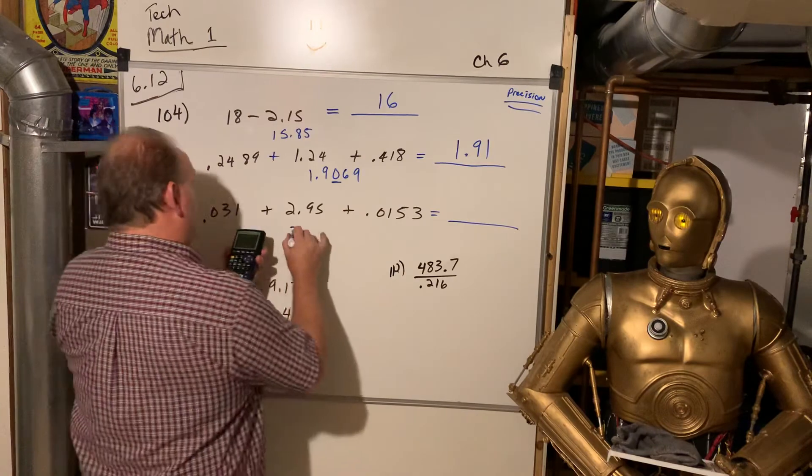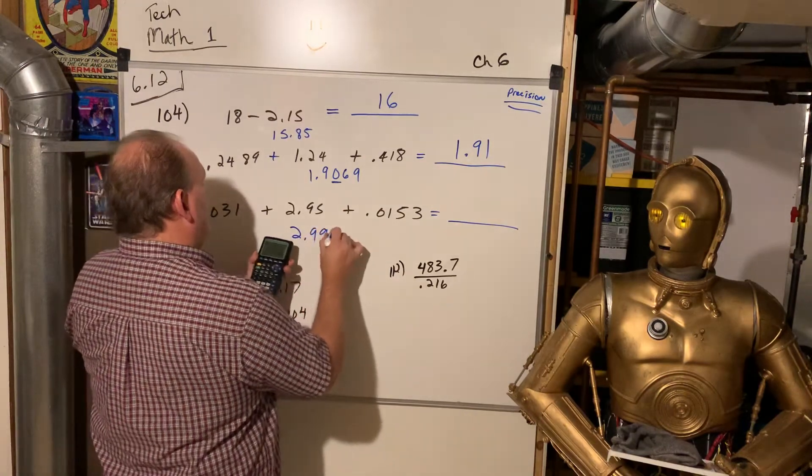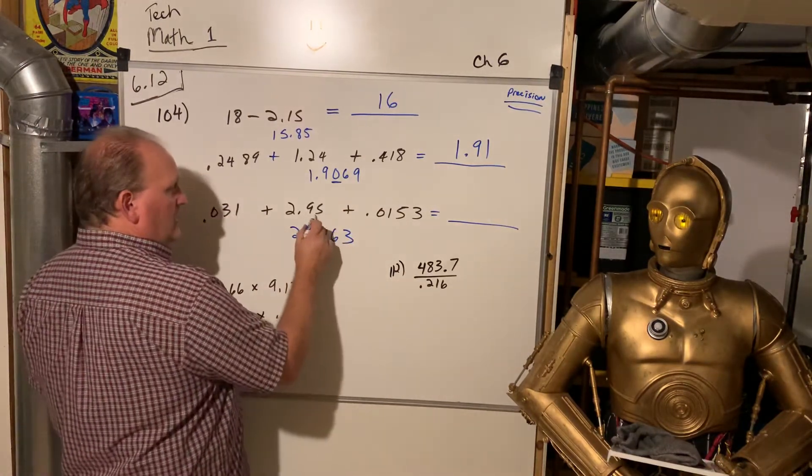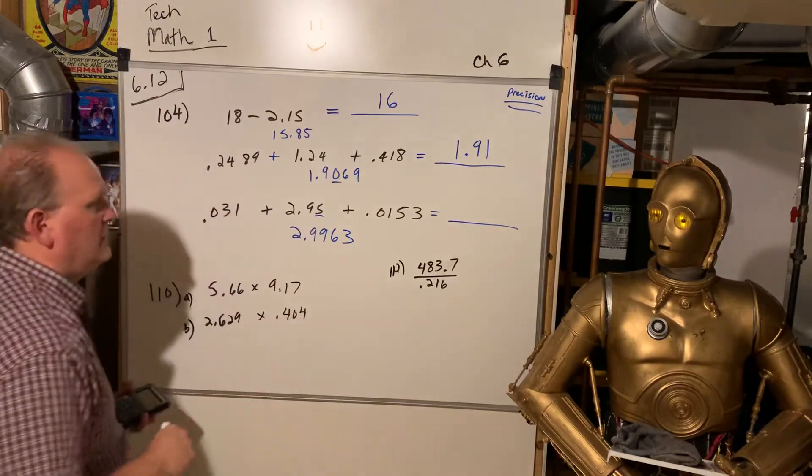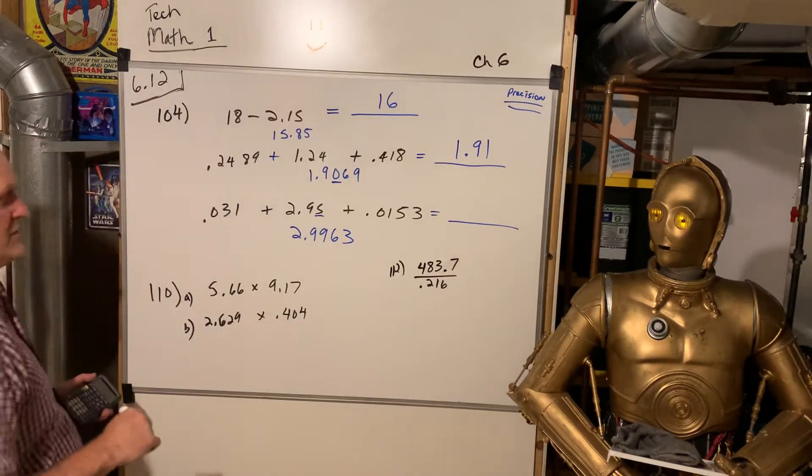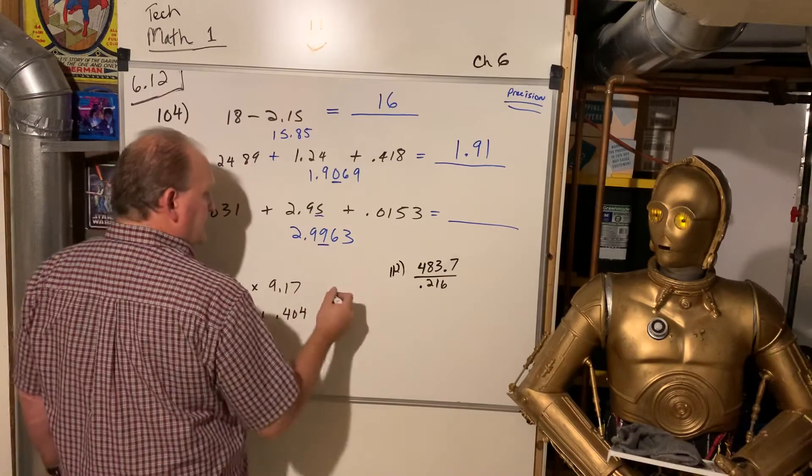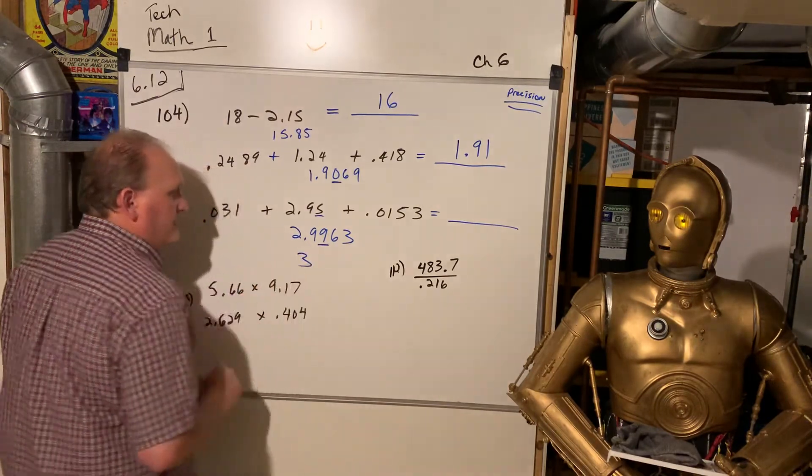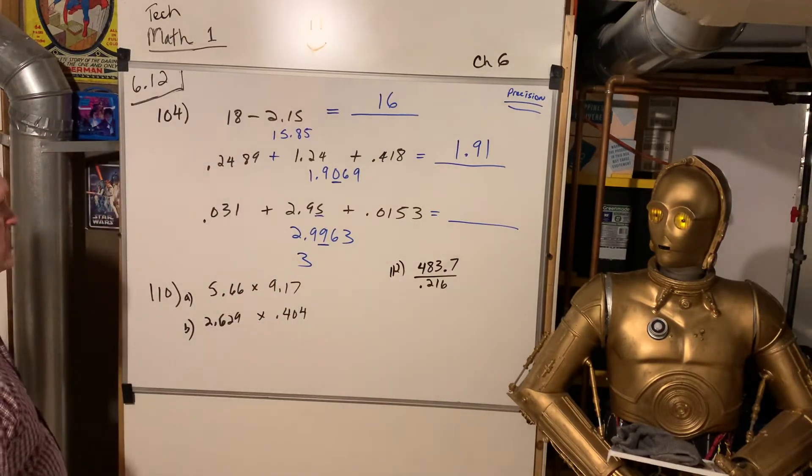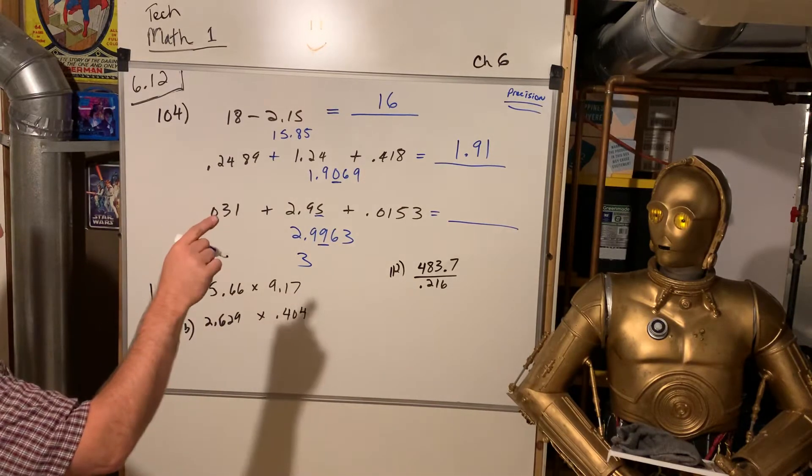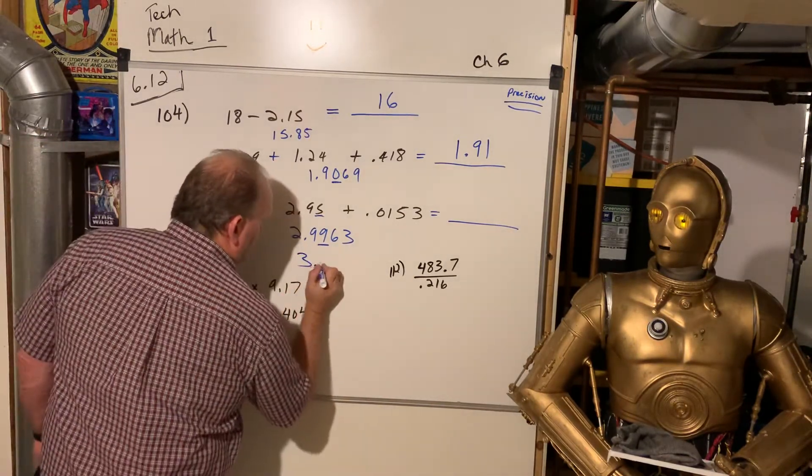So we can add them all up. 1.031 plus 2.95 plus 0.0153, 2.9963, but I only want to go to 100th place. So, I round it, but then that takes it up to 3, right?